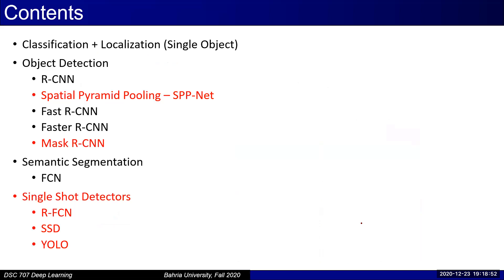We'll start our discussion with classification plus localization since it is the simplest case, where we assume a single object and find its class label and location. Then we'll move to object detection — I've chosen three related models: RCNN, Fast RCNN, and then an example from semantic segmentation which is FCN, the fully convolutional network. We may also touch on YOLO, a real-time object detector that is very commonly used today.